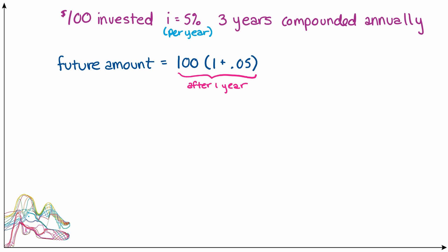After two years we'll have the amount that we had after one year, again earning interest, so we'll have that amount times 1 plus again the interest rate of 0.05.